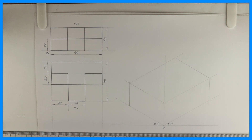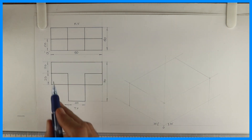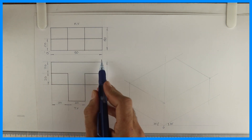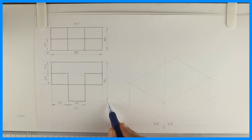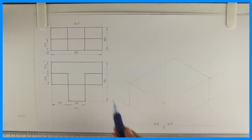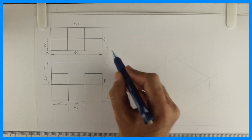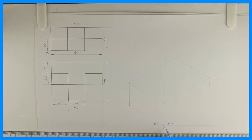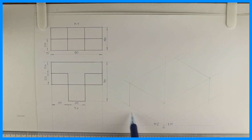Today we will draw the isometric of this problem. The front view is given. Length is 90, height is 40, width is 70. So on the right-hand side we have 90, height 40, width 70.